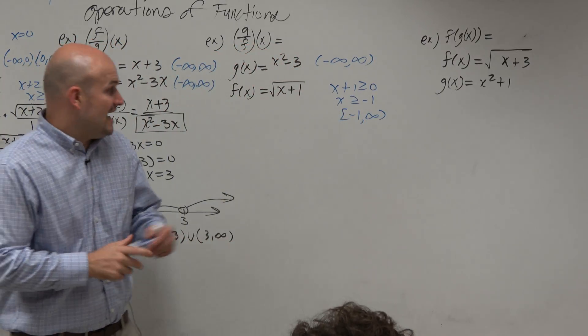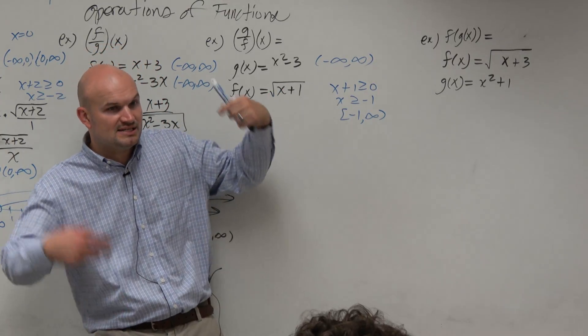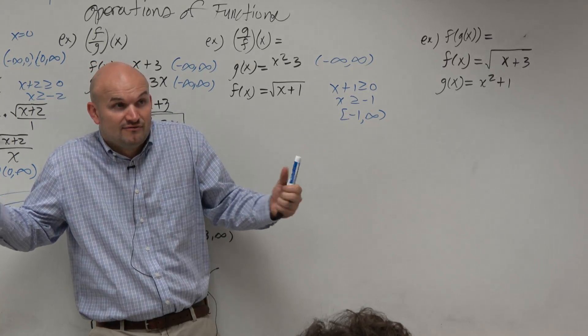Right? But negative 1 is cool, because you plug negative 1 in here, you get negative 1 plus 1 is 0. Square root of 0 is 0, right? And that's fine for a radical.